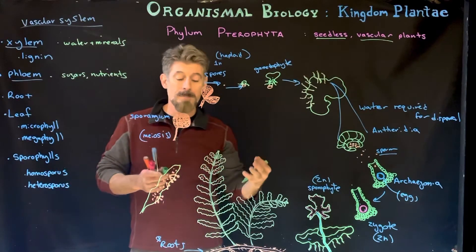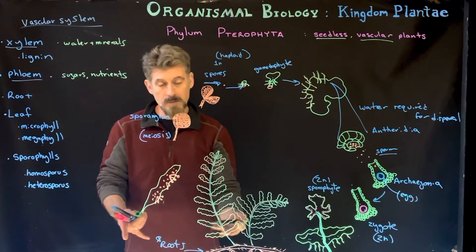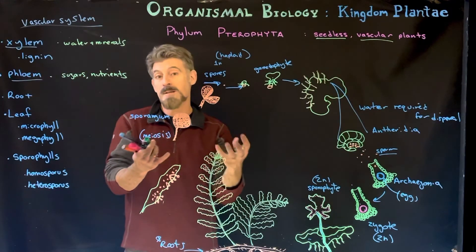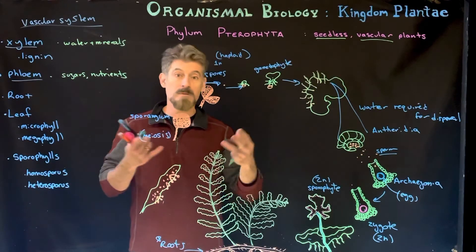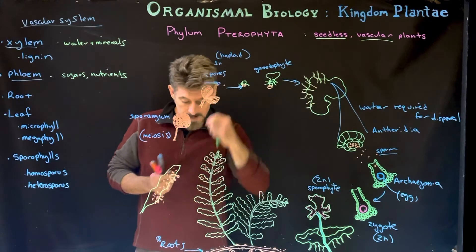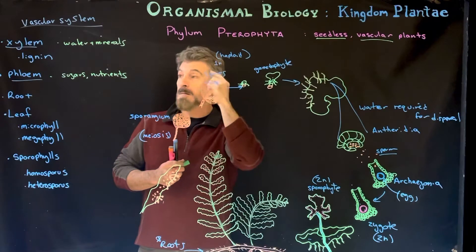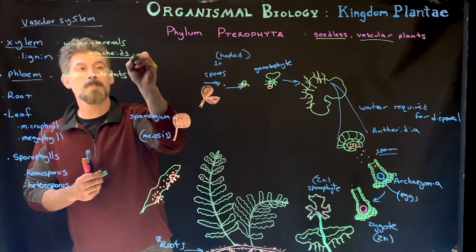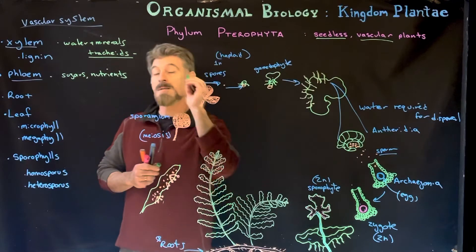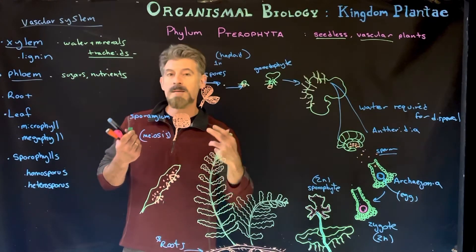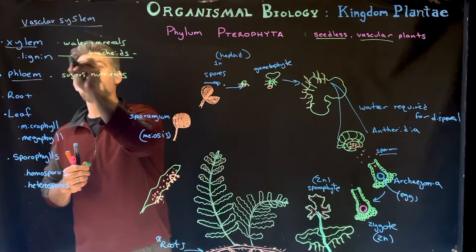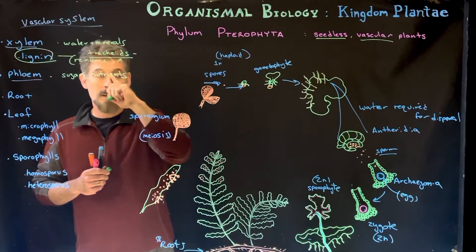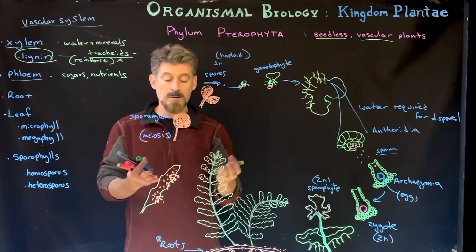Xylem transports material the plant takes up from the soil and brings it to the rest of the plant, whereas phloem takes chemicals the plant produces itself — some from photosynthesis — and distributes them to cells in the plant that don't undergo photosynthesis. In the xylem, there are vascular cells called tracheids, which are tube-like cells that carry water.